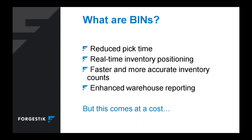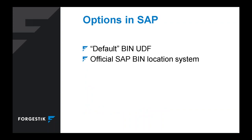The more process-driven your warehouse is getting, the more I'll recommend going for bin locations. There are big benefits, but you don't want to jump into it. If you want to just dip your toes in, you can get about 75% of the benefit without the extra administration. You could use a default bin location as a UDF on a particular item code — if your items are smaller and don't move around much, just add a bin location UDF and start thinking about bin organization.